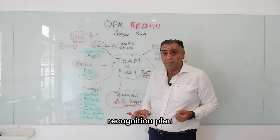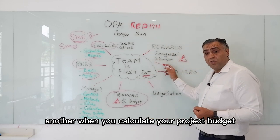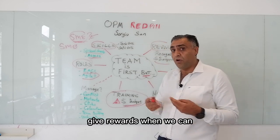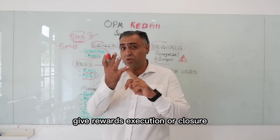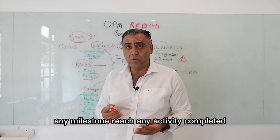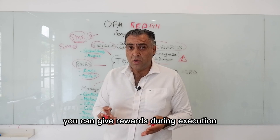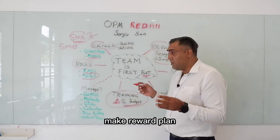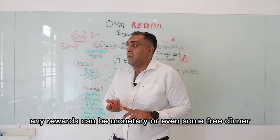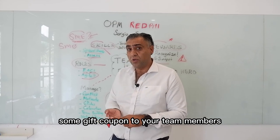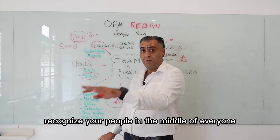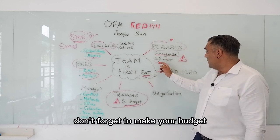Rewards plan and recognition plan — another important component. When you calculate your project budget, don't forget the rewards plan. Give rewards during execution — not at closure. Any milestone reached, any activity completed, you can give rewards. Rewards can be monetary, a free dinner, a gift coupon. Or simply recognition, which is free — recognize your people in front of everyone. Don't forget to include this in your budget.